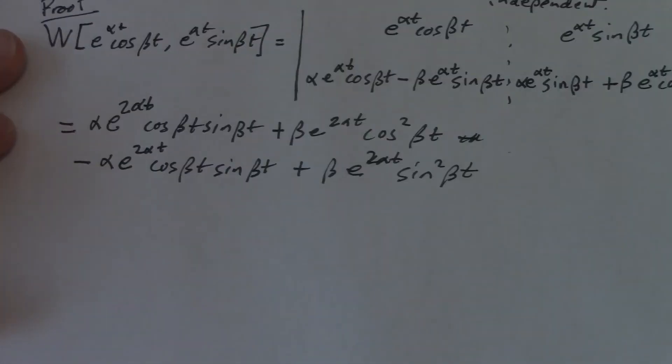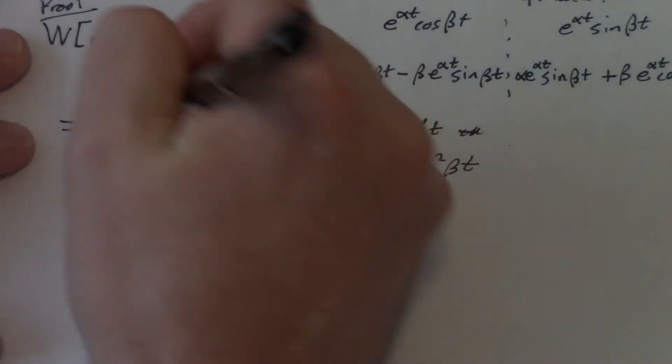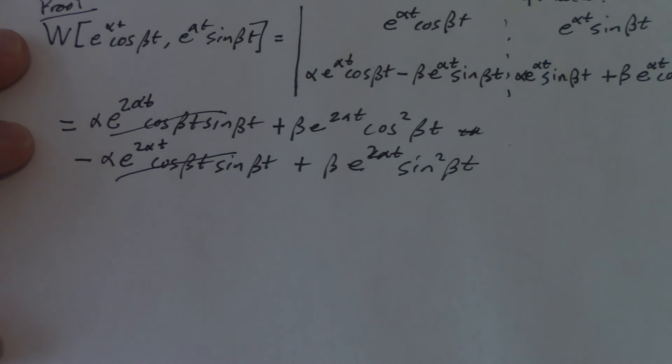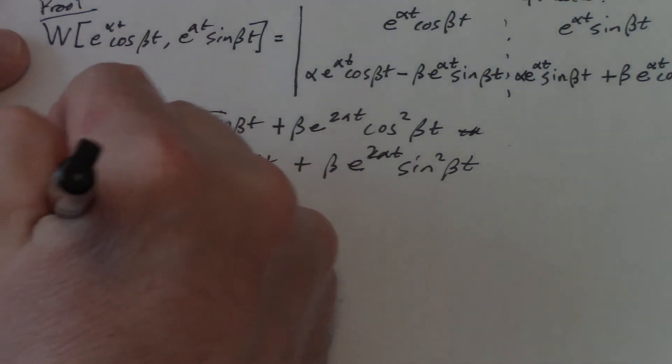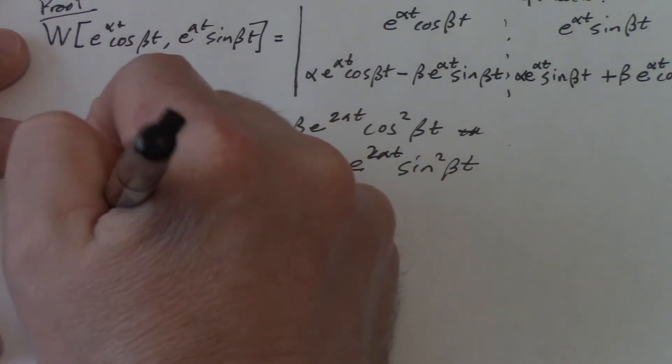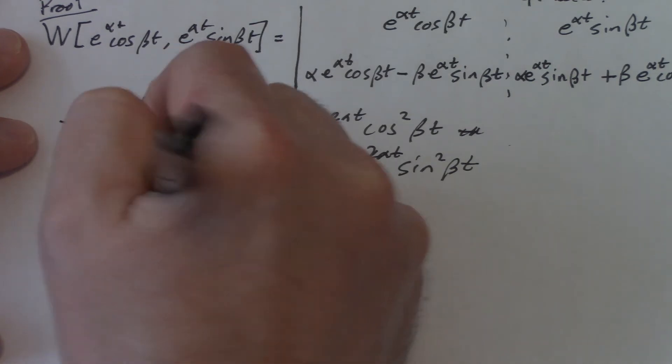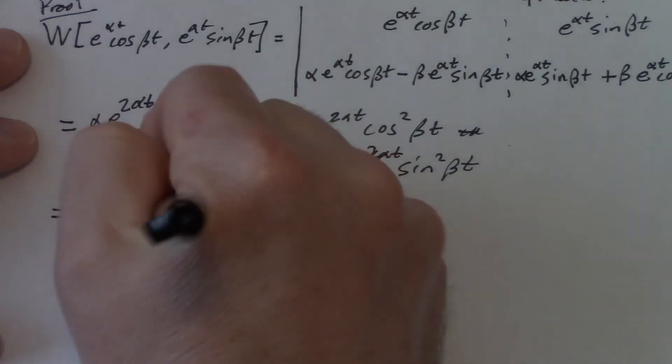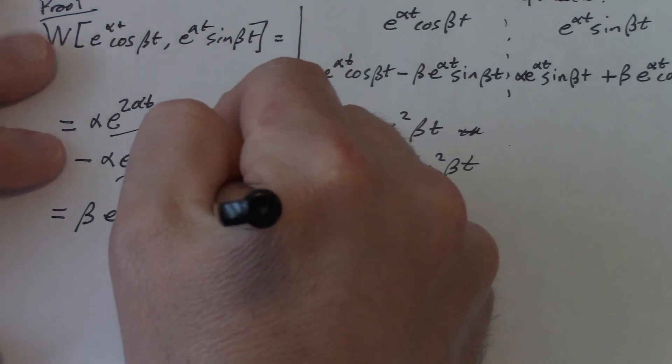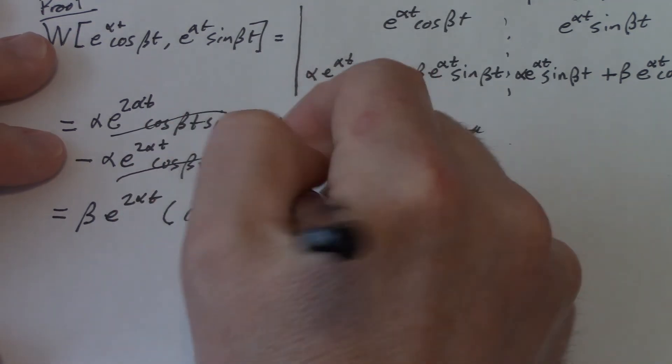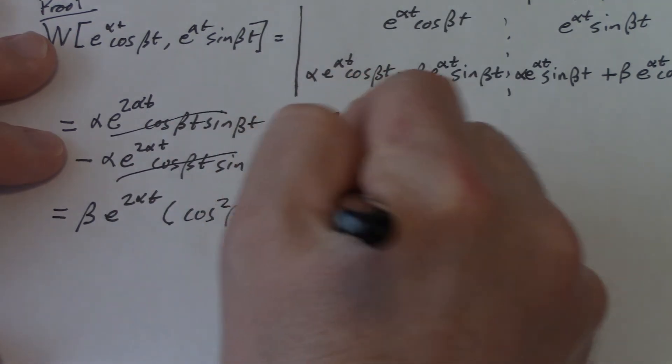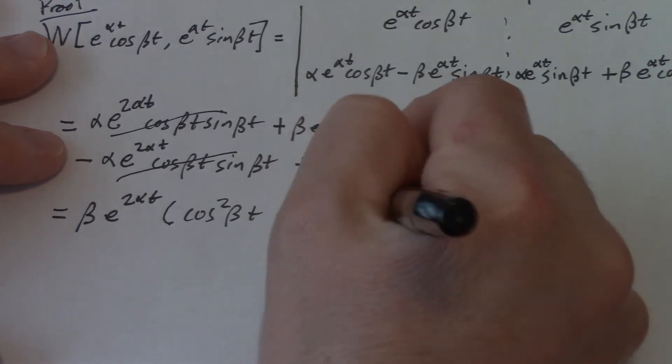Just as promised, look at what cancels. That guy cancels with that. Notice the things that I have in common there, so I'll factor them out. I have a beta e to the 2 alpha t in common, and then times cosine squared beta t plus sine squared beta t.